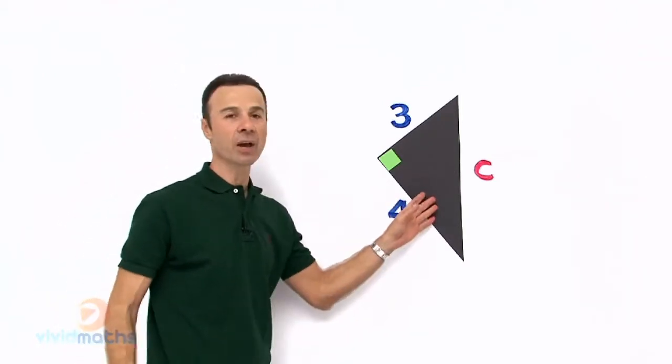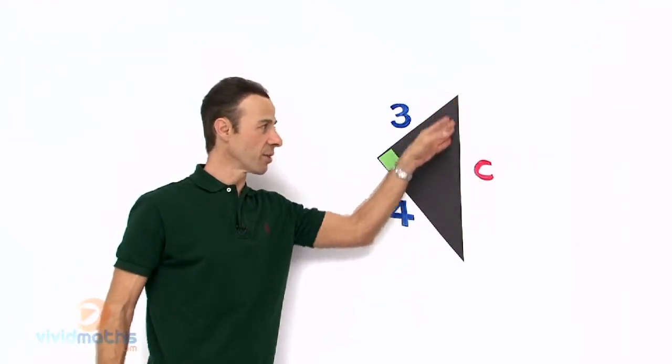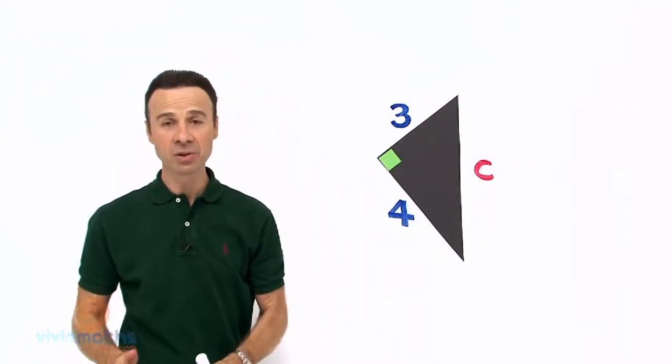Now you might notice that this is a right angle triangle and the C that we are looking for is actually the longer side, which is also referred to as the hypotenuse.